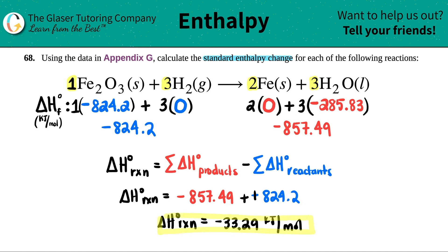And that's it. So that means that when this reaction happens, you will release, because it's a negative, 33.29 kilojoules per mole. And that's it.